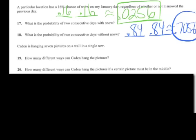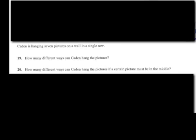Okay, let's move on to number 19 and 20. Okay, number 19. Caden is hanging seven pitchers on a wall in a single row. How many different ways can Caden hang the pitchers?